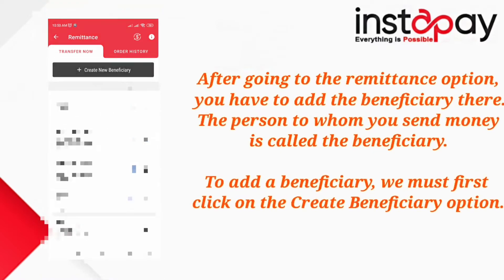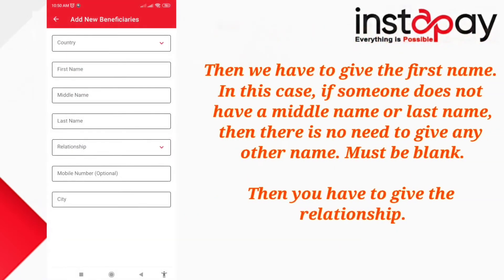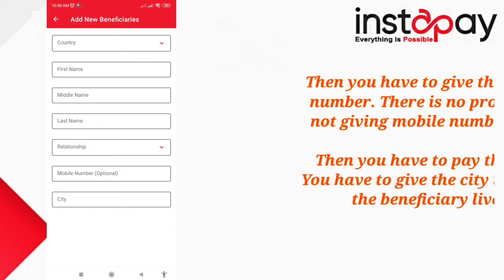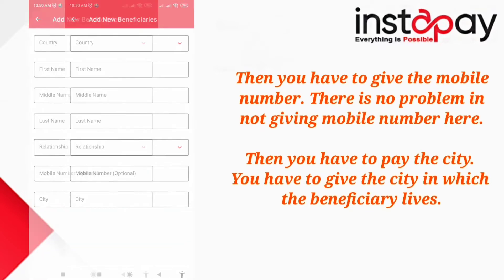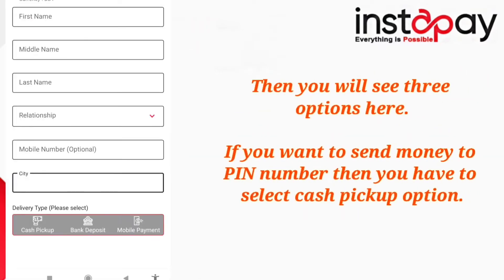Then we have to give the first name. If someone does not have a middle name or last name, there is no need to give any other name — it must be left blank. Then you have to give the relationship. Then you have to give the mobile number; there is no problem in not giving the mobile number here. Then you have to provide the city in which the beneficiary lives.